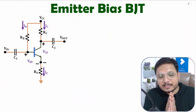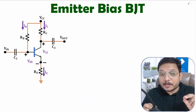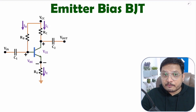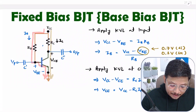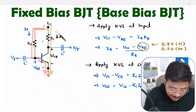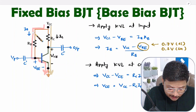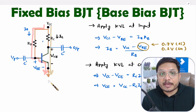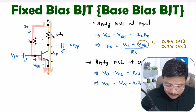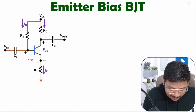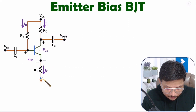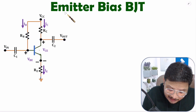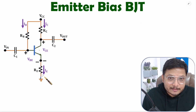Hello friends, welcome to Engineering Funda Family. In this video I'll explain emitter bias of BJT. In my last video I explained fixed bias of BJT. In that circuit, if you add an additional RE resistance, you will have emitter bias. So by adding RE resistance to fixed bias, you get emitter bias.